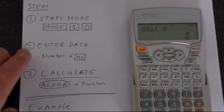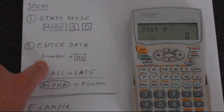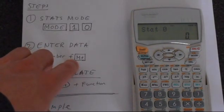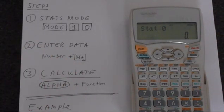The second step is to enter data. To enter data in this calculator, just type in the number and then press the M plus button. You can identify the statistics buttons on this calculator because they're in green writing, and a lot of the functions are accessed using the alpha button.